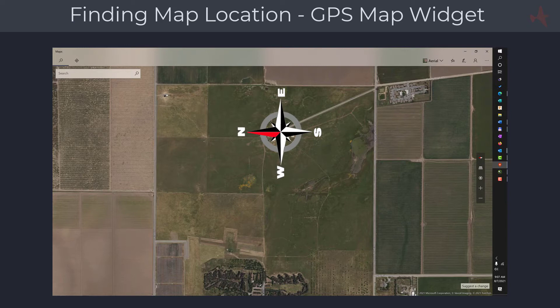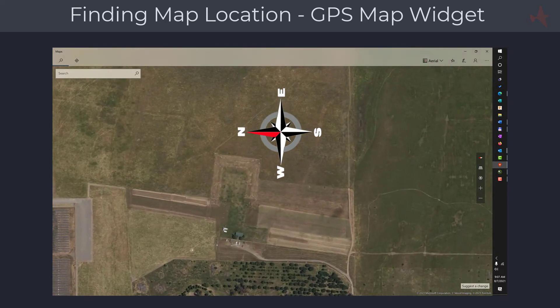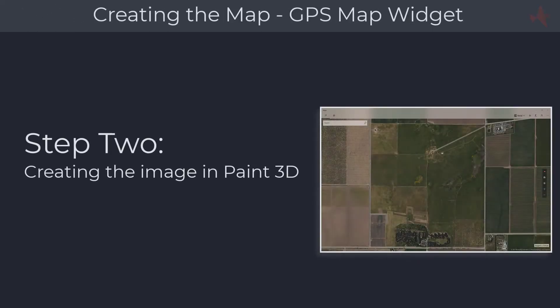For example, if you fly sailplanes you may want a map area with a wider view than when you fly a helicopter closer to the field. The next step is to take a screenshot of the map. You can use the Windows Print Screen feature or the Windows Snip and Sketch utility to mark and select the capture area. Make sure you capture a larger area than required, as we will be resizing the captured image later.